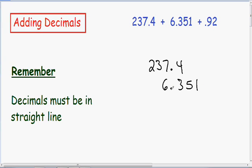Notice how the decimals are in a straight line. One is exactly on top of the other. And this is all being added with 0.92. All three decimals are in a straight line. They are exactly on top of one another.